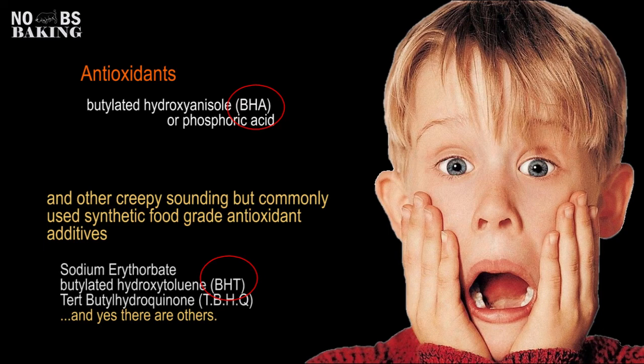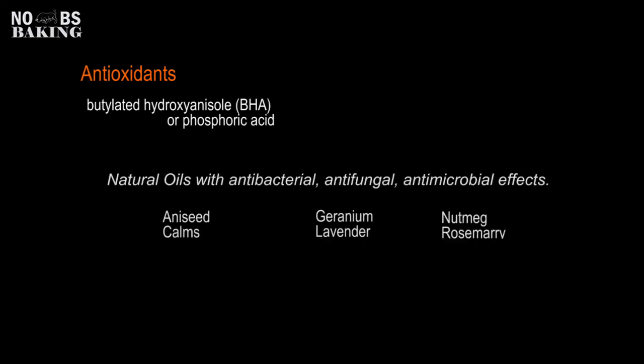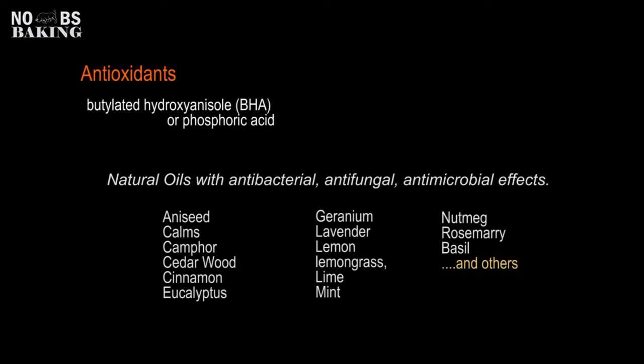Home bakers have been shying away from synthetics and scary-sounding additive names for years, generally opting for alternative naturals like essential oils such as aniseed, caraway, camphor, cedarwood, cinnamon, eucalyptus, geranium, lavender, lemon, lemongrass, lime, mint, nutmeg, rosemary, basil — the list goes on. Traditionally, these have been used by people in different parts of the world, and these vegetable oils have been discovered to possess antibacterial and antifungal benefits, making them suitable for use as natural food preservatives.